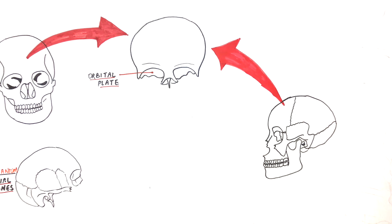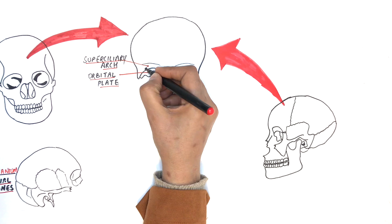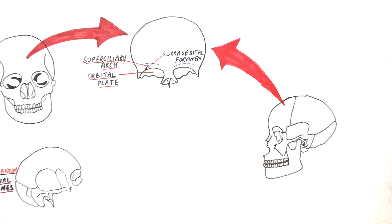At the superior part of the orbital plate, frontal bone has got a horizontal prominence called the supraciliary arch, and this is the site where our eyebrows lie. Just down to the supraciliary arch and superior to the orbital plate is the supraorbital foramen, through which supraorbital nerve and vessels exit.